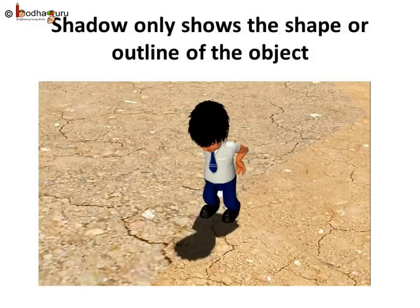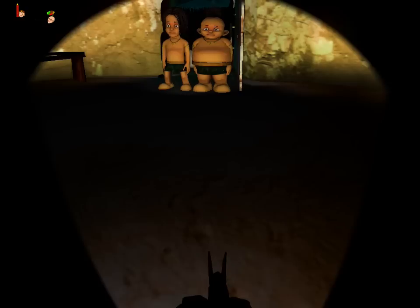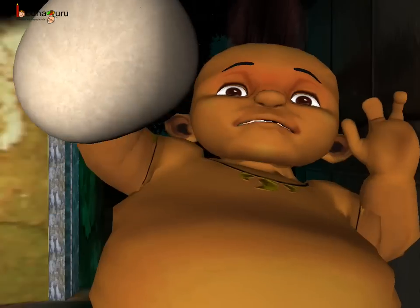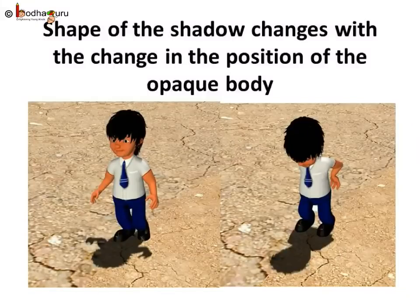If you see just the shadow of the boy, can you tell whether he is wearing a tie or not? No, because shadow only shows the shape or the outline of the object and not the details. Just like in the story, the thieves saw the huge black shadow of the toy monster and, seeing its outline, thought it was a ghost. The shape of the shadow also changes with the change in position of the opaque body — the shadow changed when the body bent down a little.